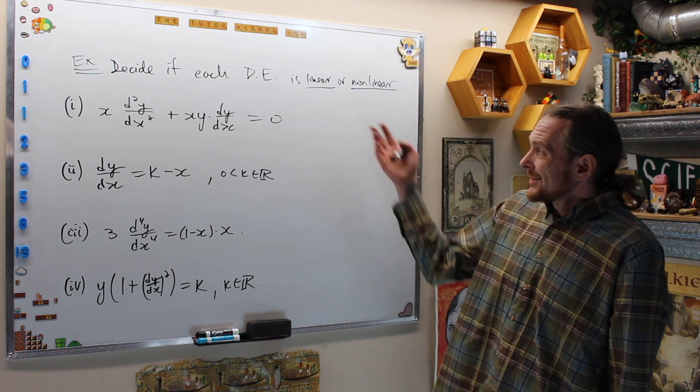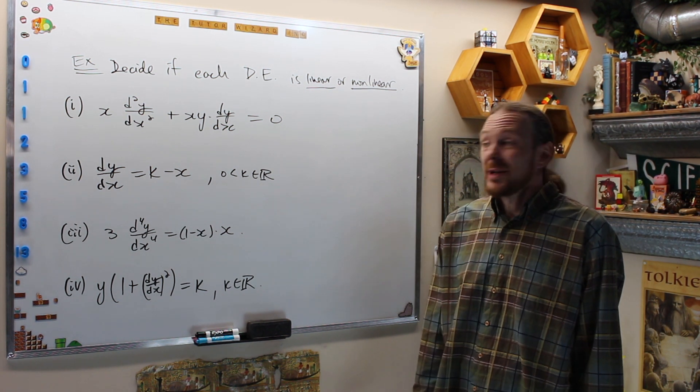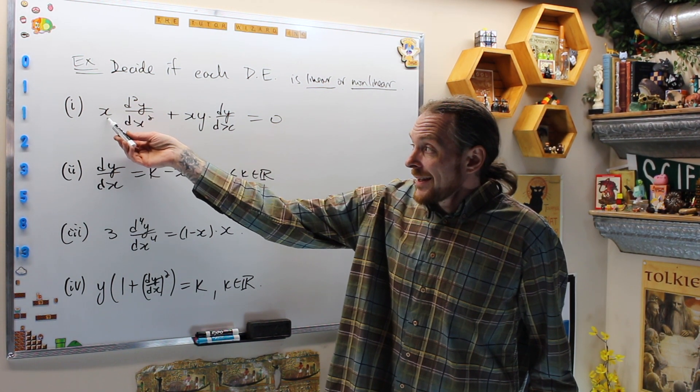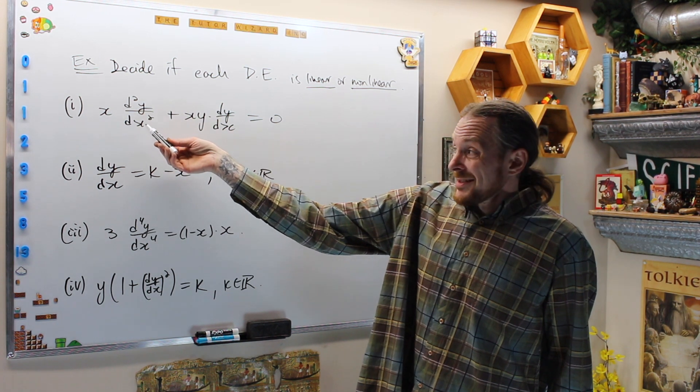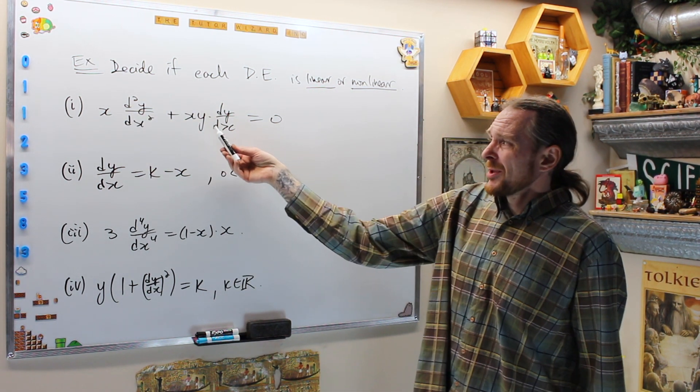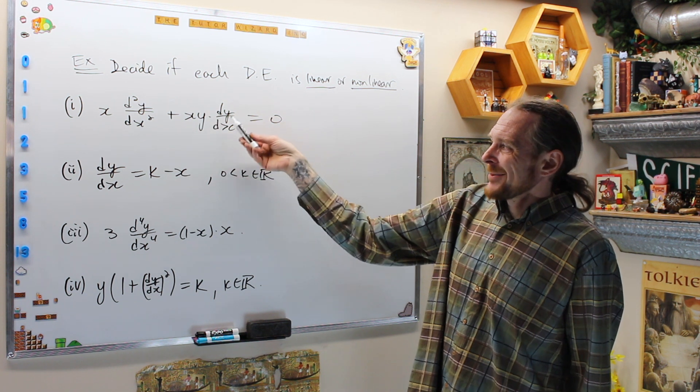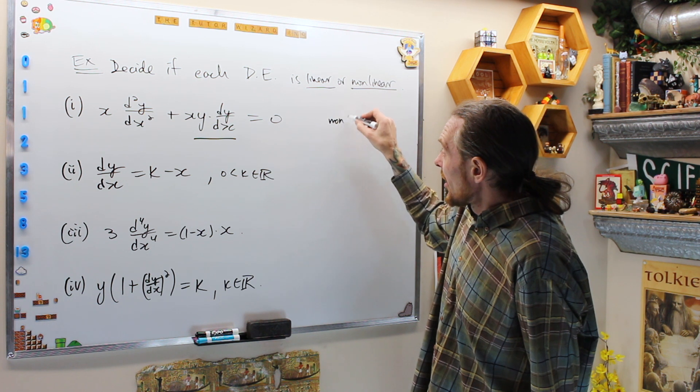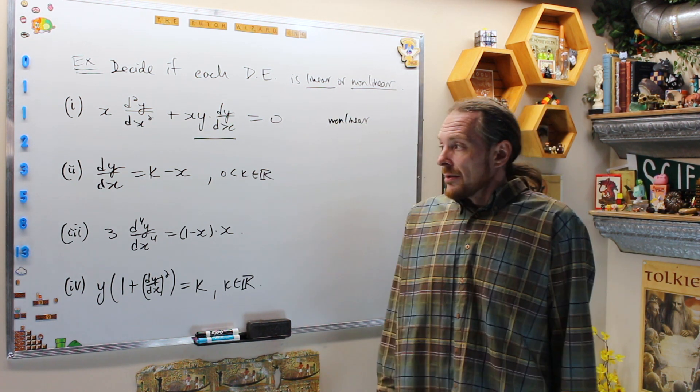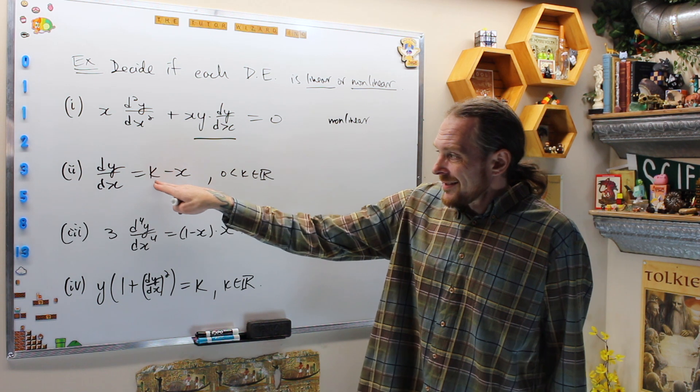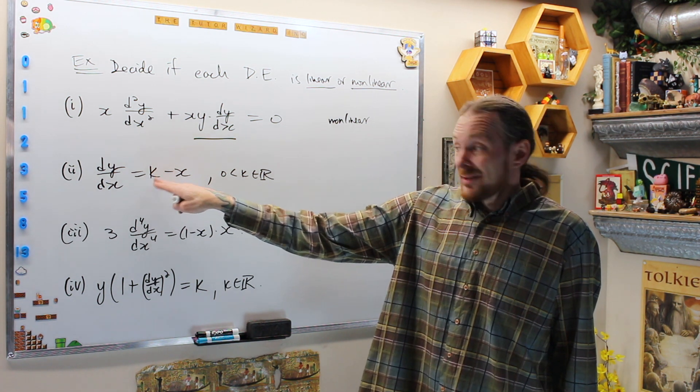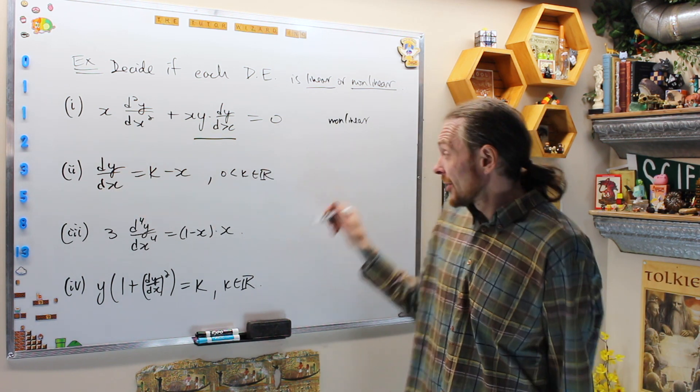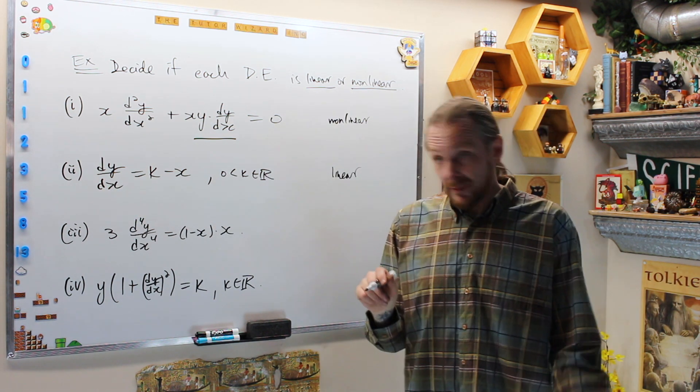As our last example, decide if each of these equations is linear or non-linear. The first equation: this term is a function of X times the second derivative, so that term is linear. But this one has X times Y times the first derivative, which is bad. So this term is non-linear. This is non-linear. This term is just a constant. This term is just a function of X. This term is one times the first derivative. So this is a linear first order differential equation.